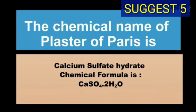The chemical name of plaster of Paris is calcium sulfate hemihydrate and chemical formula of plaster of Paris is CaSO4·½H2O.